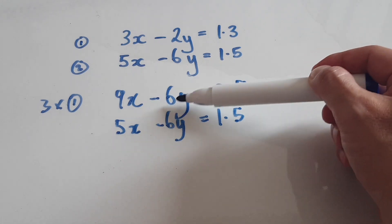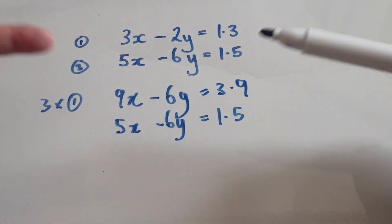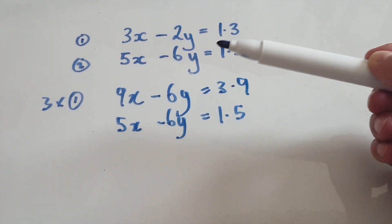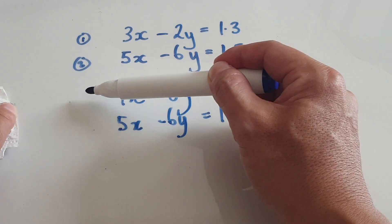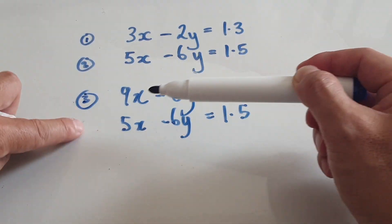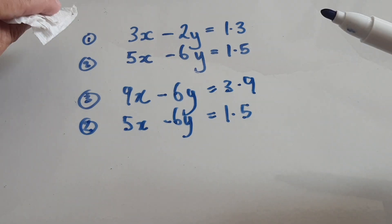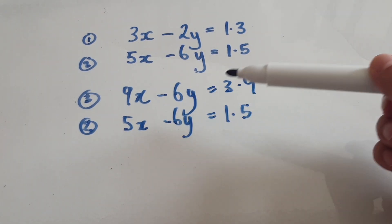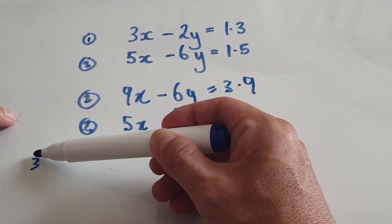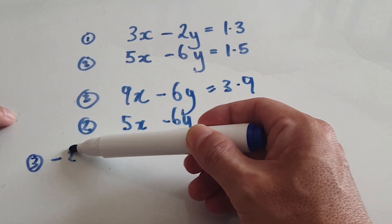Notice that you've got 6y and 6y exactly the same, so you can eliminate. Let me just call this equation 3, and this is equation 2, it's exactly the same. So now we can eliminate the y. If we get equation 3 take away equation 2, then get the top equation take away the bottom equation, then we would eliminate the y.